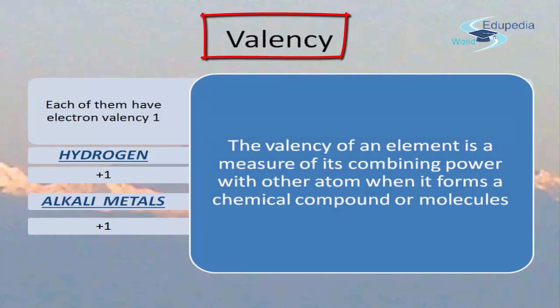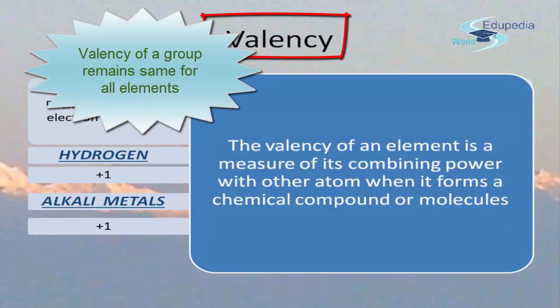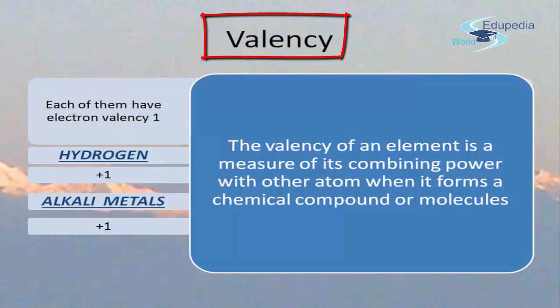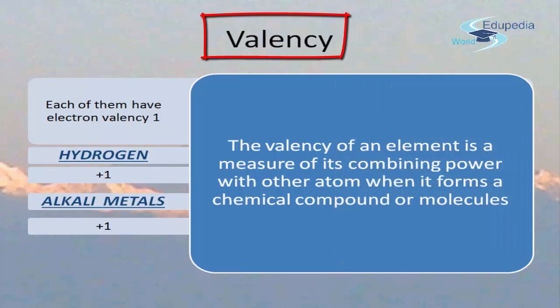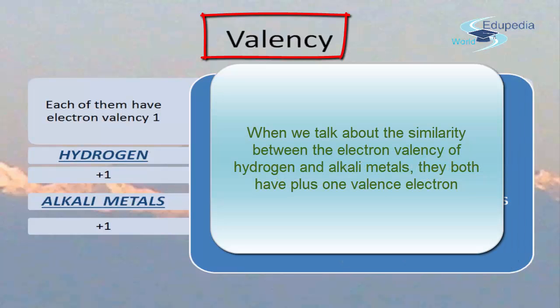The valency remains the same for all elements in the group. All alkali metals — lithium, sodium, potassium, rubidium, cesium, and francium — have a valency of one. Similarly, comparing hydrogen and alkali metals, they both have a +1 valence. This is another similarity between hydrogen and alkali metals.